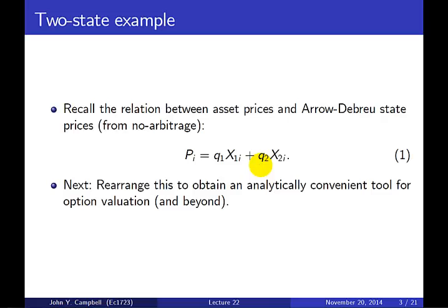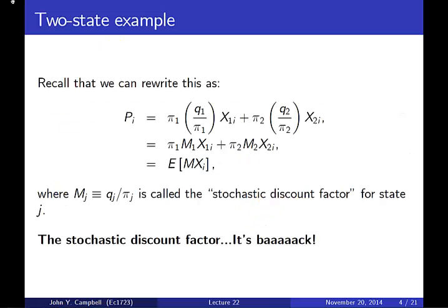That formula can be used to price any asset in a two-state example, and we can rearrange it to obtain an analytically convenient way to value options. We rewrite the formula by multiplying and dividing by probabilities, then define the ratio of state price to probability as the stochastic discount factor m. The price is then the expected product of the stochastic discount factor and the payoff — probability times m times payoff, summed across states.